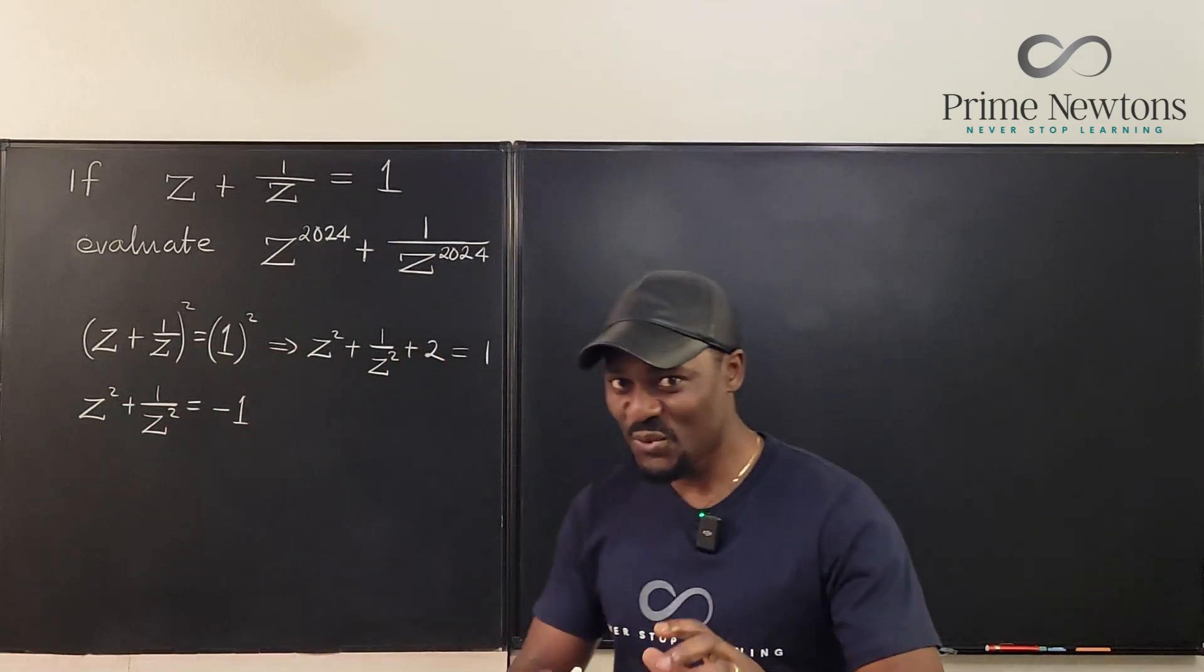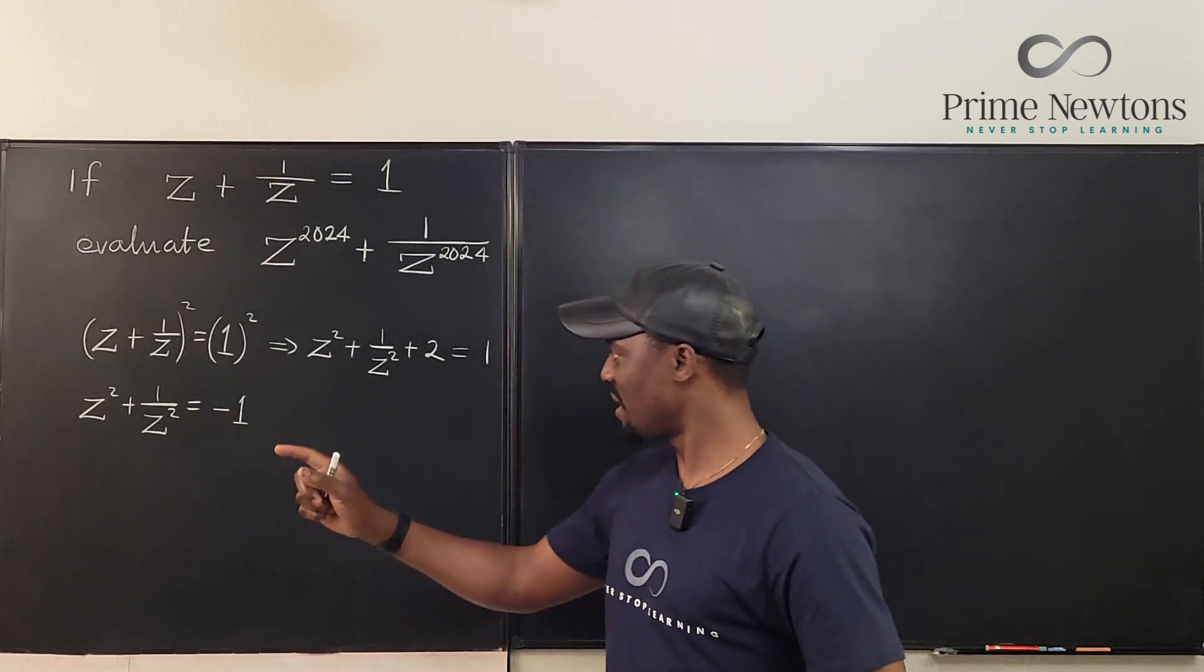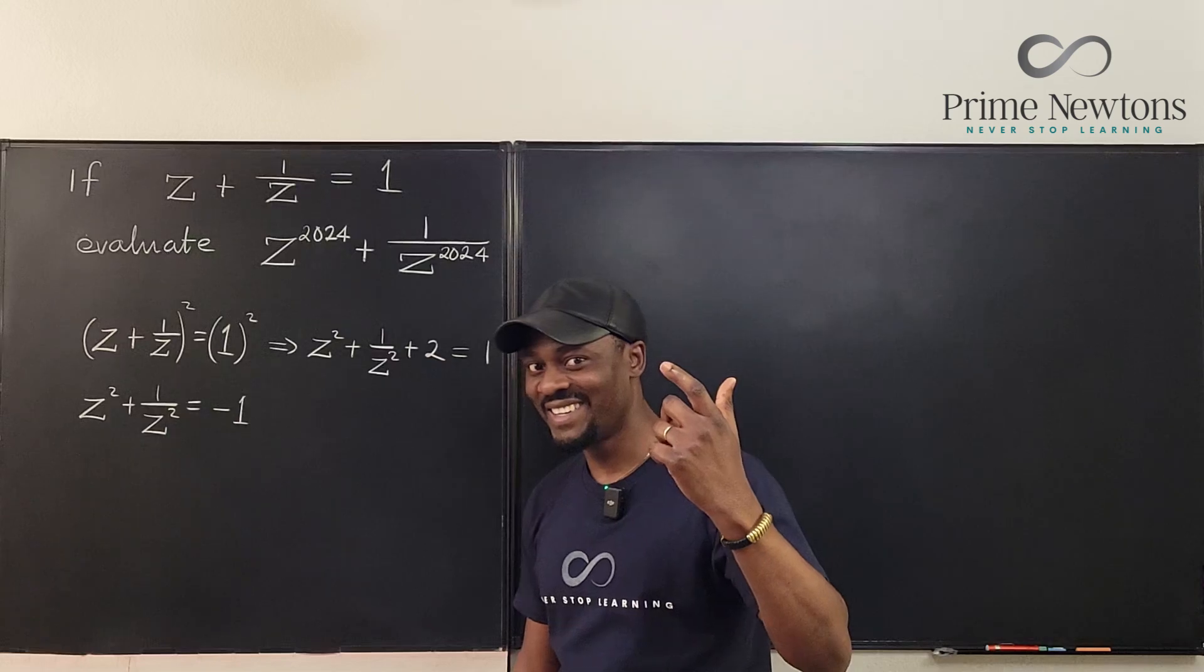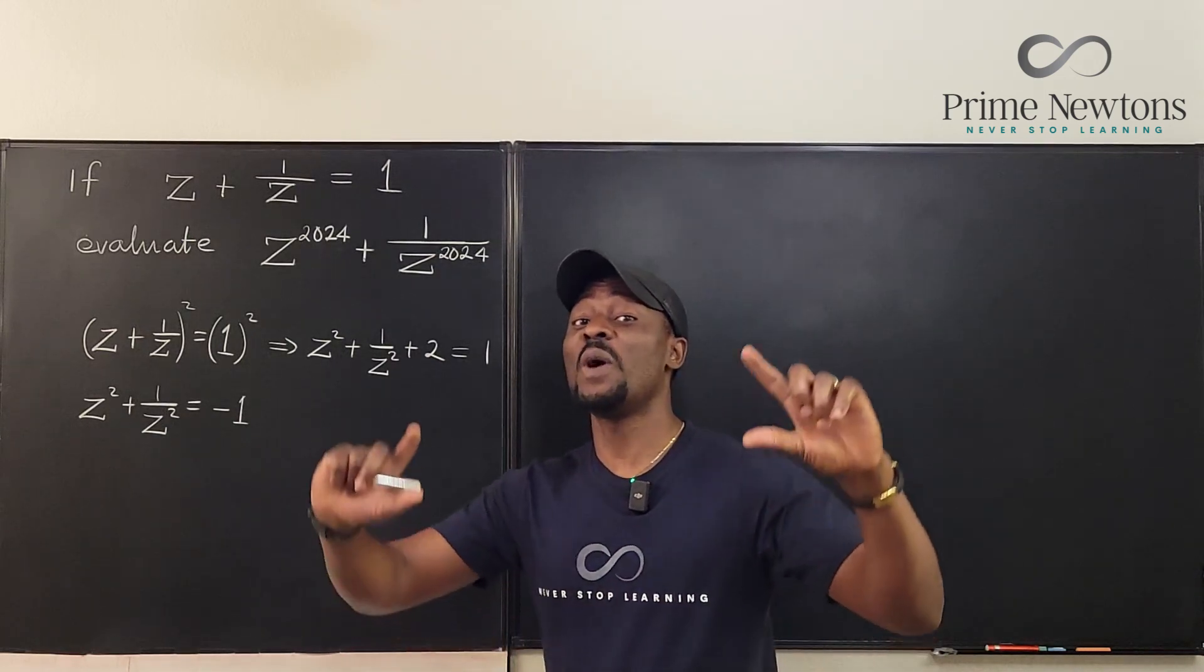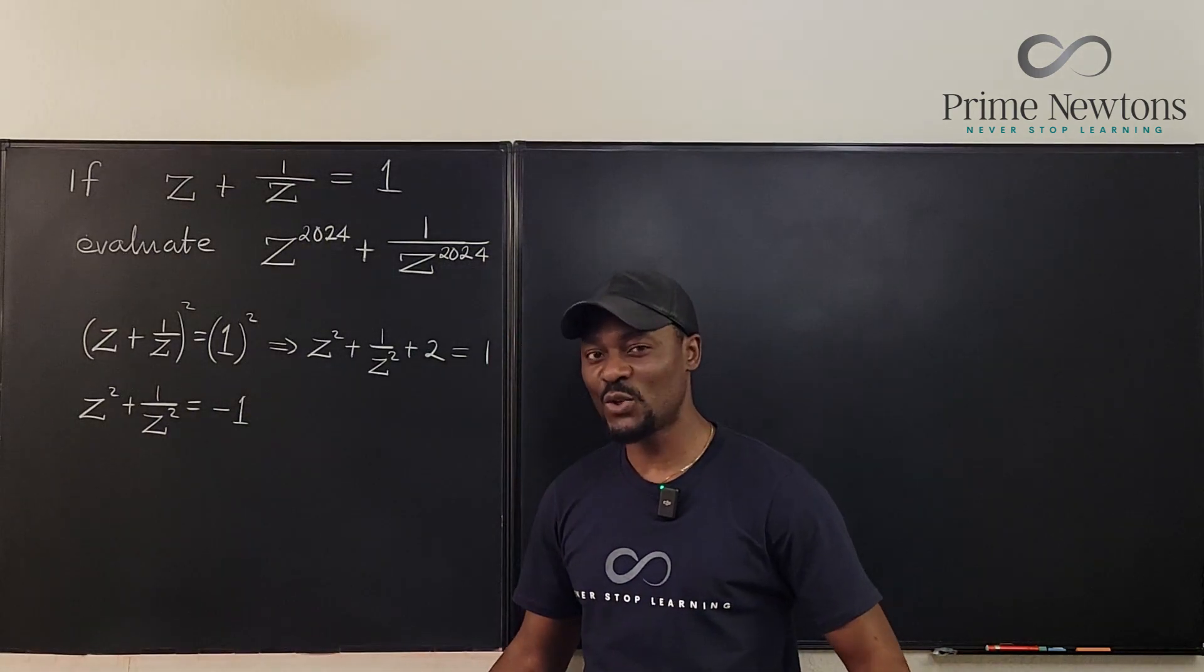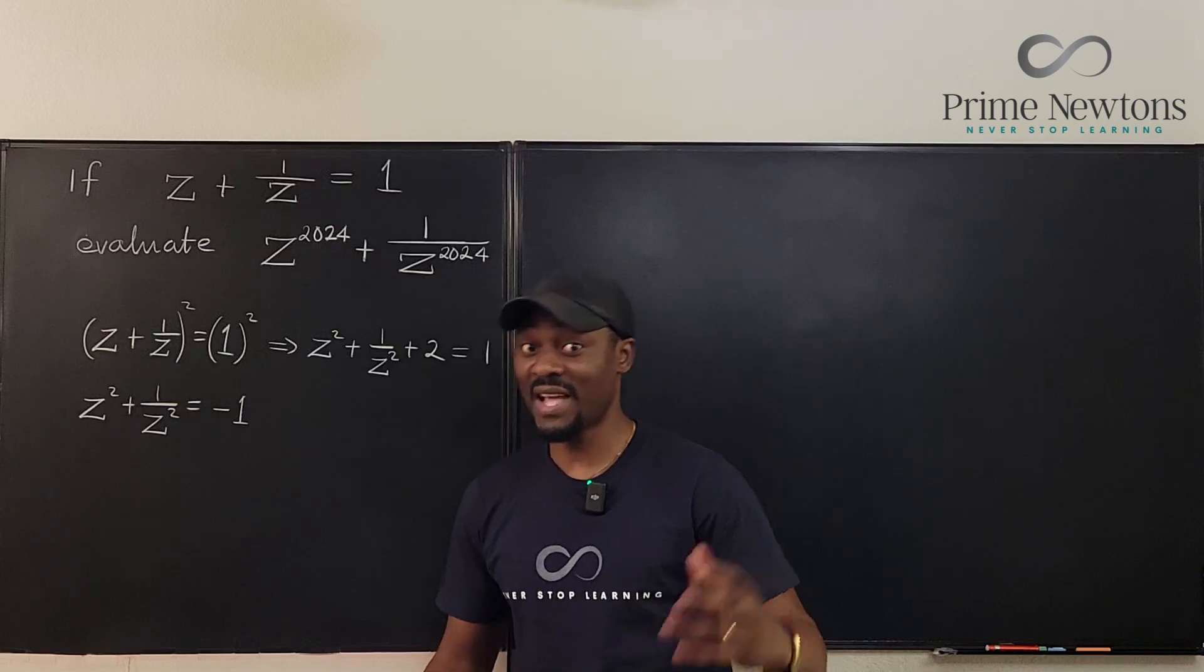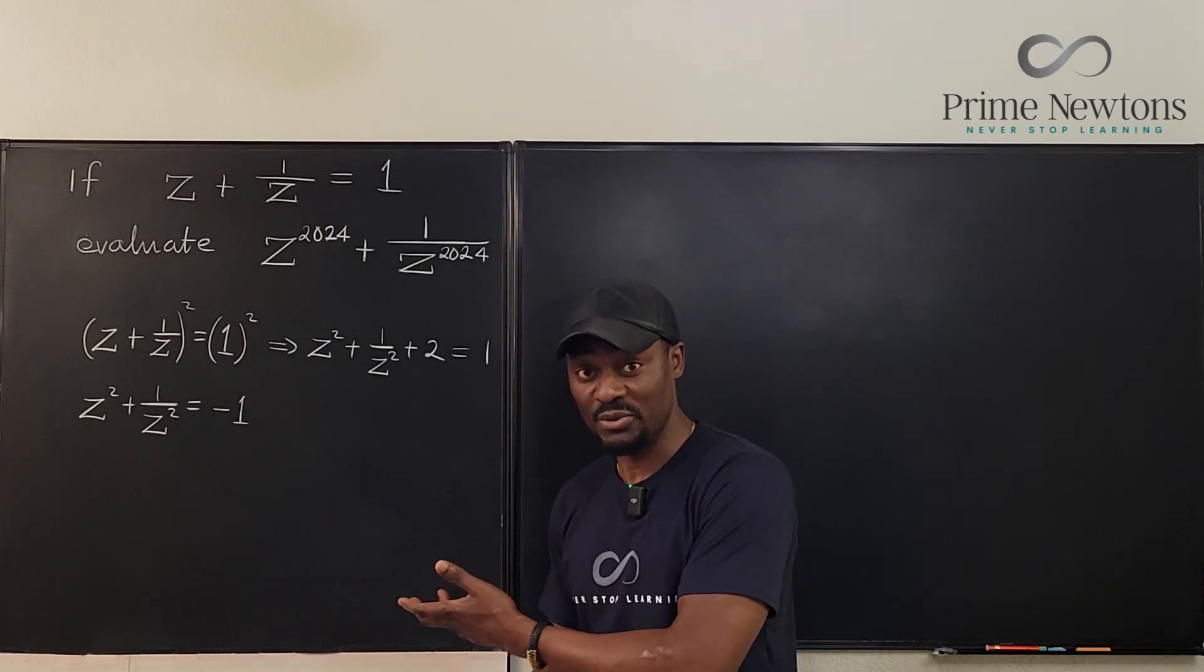So z plus 1 over z gave us 1. As soon as you square it, it became minus 1. Something has to tell you that there's something going on. Only in an imaginary world would the sum of squares end up with a negative. So you must know that your answers are complex numbers. And that's why the whole complex variable way of solving it became an option.